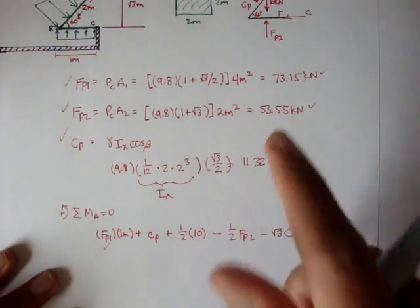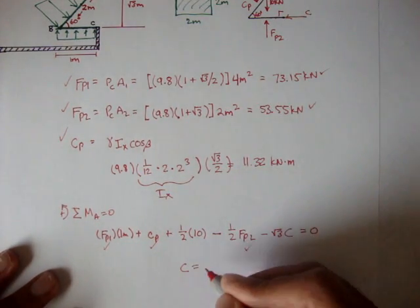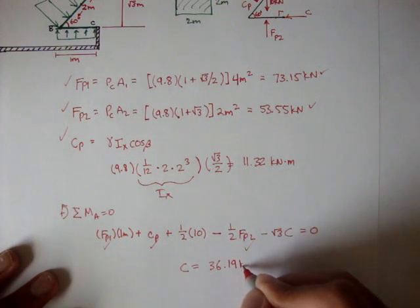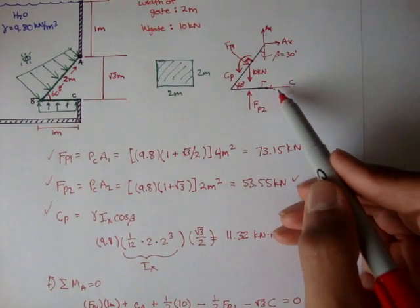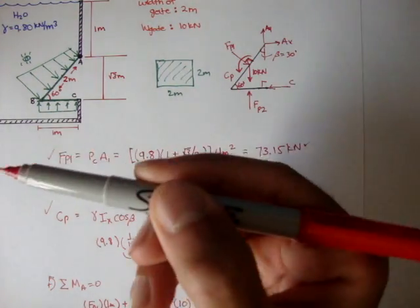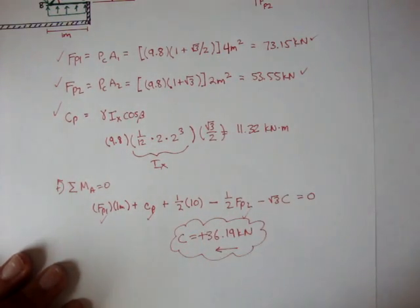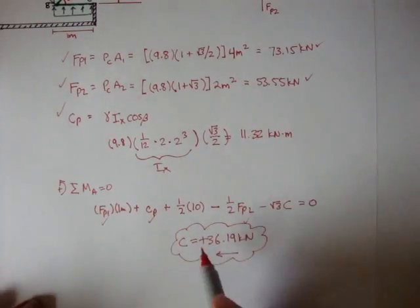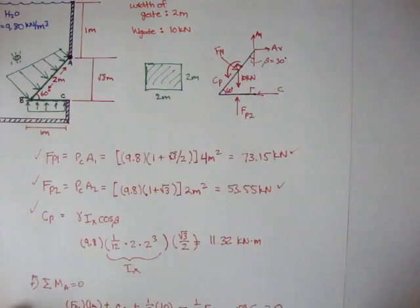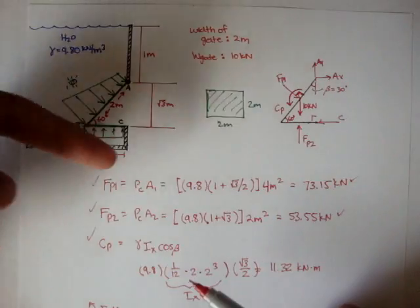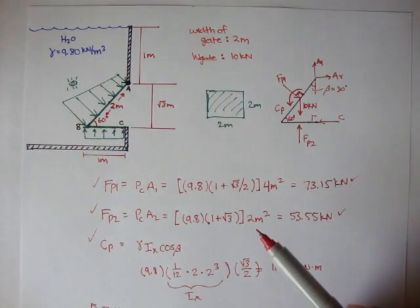Now if we plug in fp1, which we know, we plug in cp, which we know, and we plug in fp2, which we know, we can find that c is about 36.19 kN, and it's acting this way. The reason I know it's acting that way is because we assumed that the reaction is going left, and when we calculated c, it turned out to be a positive answer. A positive answer means our assumption here was right. So the reaction at c is pushing the gate this way, and that makes sense, because this pressure here is pushing the gate this way, and at c we need a force this way to make sure this doesn't break the little rigid wall there.